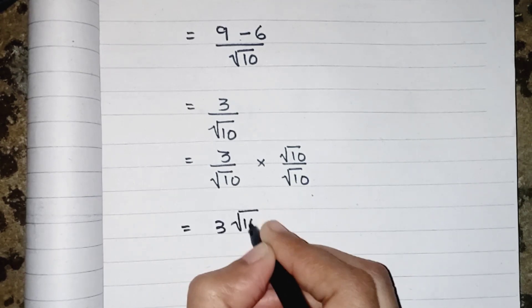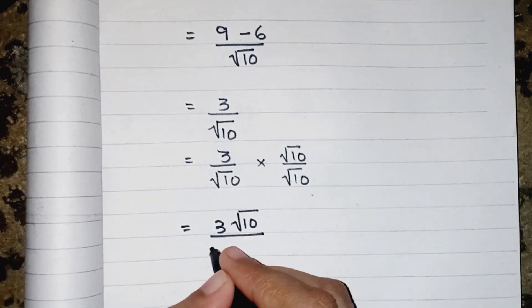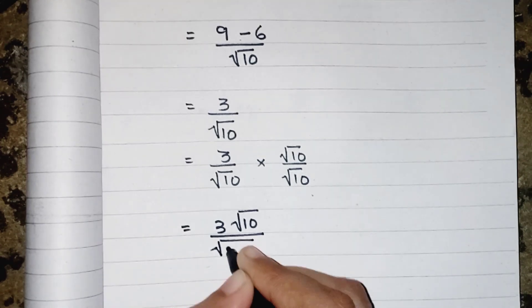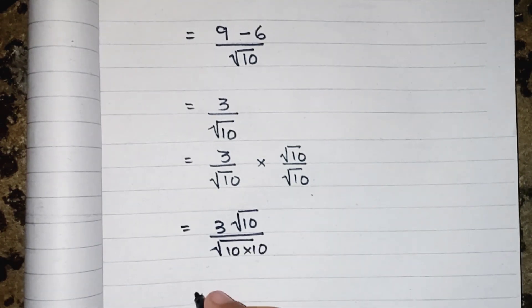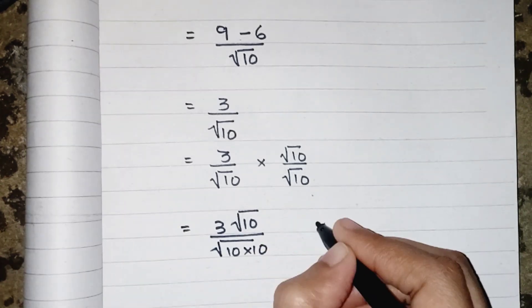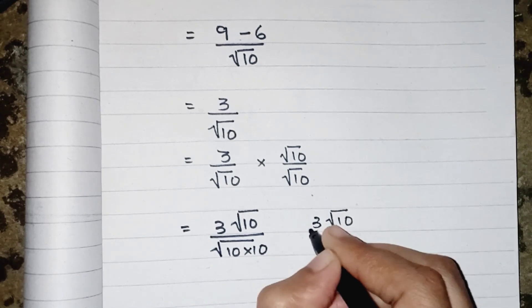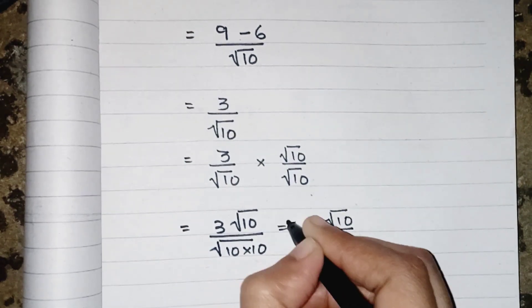And when root 10 and root 10 will multiply to each other, it will give us 10. So we can write it like 3 root 10 upon 10.